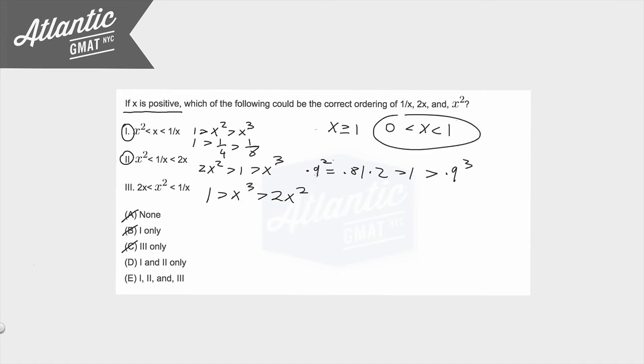So whatever number you plug in between 0 and 1, this is always going to be smaller than this. x cubed is always going to be smaller than x squared when you plug in one of these numbers. And to add to that, they're even giving us the clue with the 2 that you're even multiplying this one by 2.